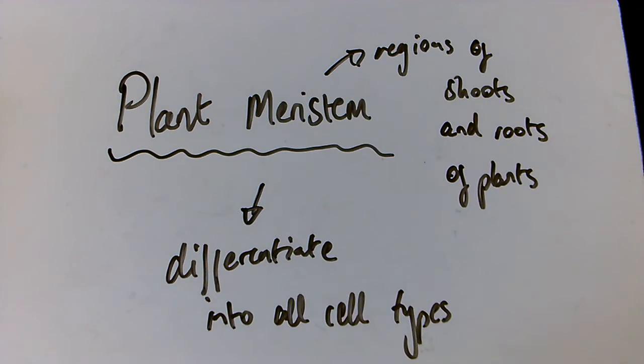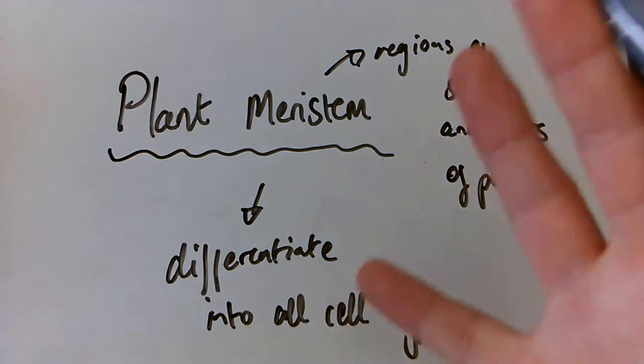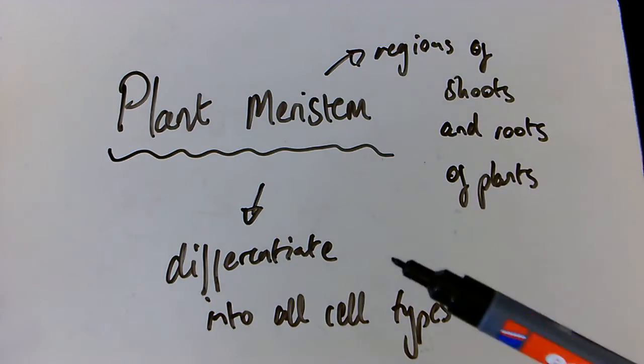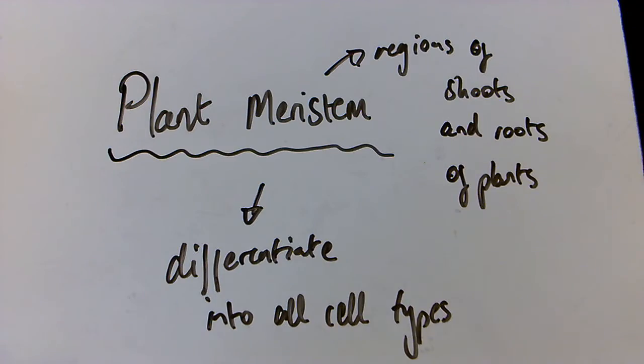And these can be used to create clones of whole plants. So if you were, for example, you have this certain plant that you wanted to create an exact copy of, you could do it via the process of using plant meristem cells.